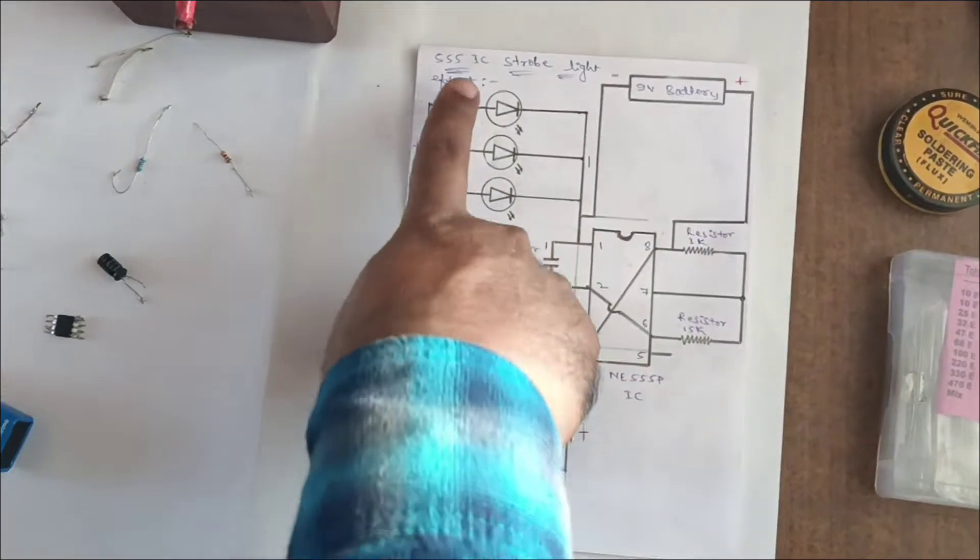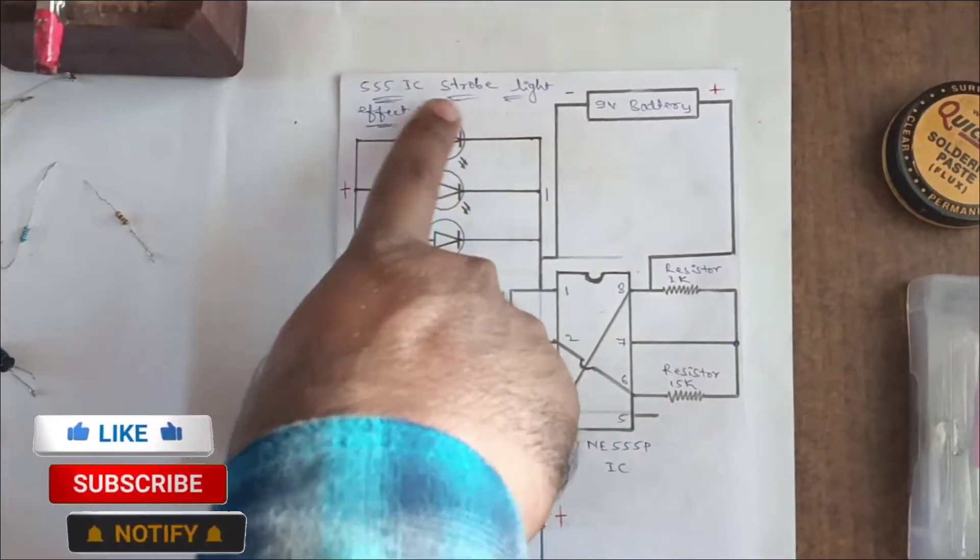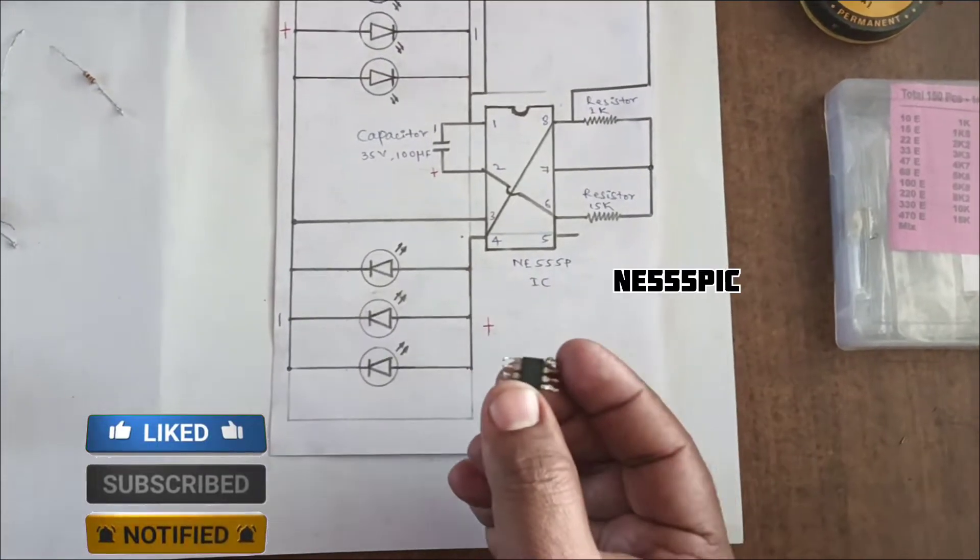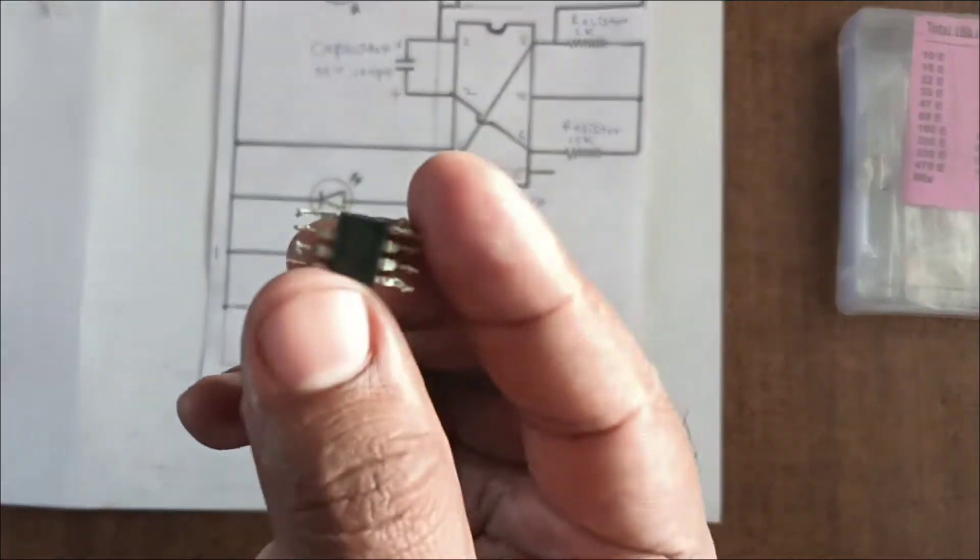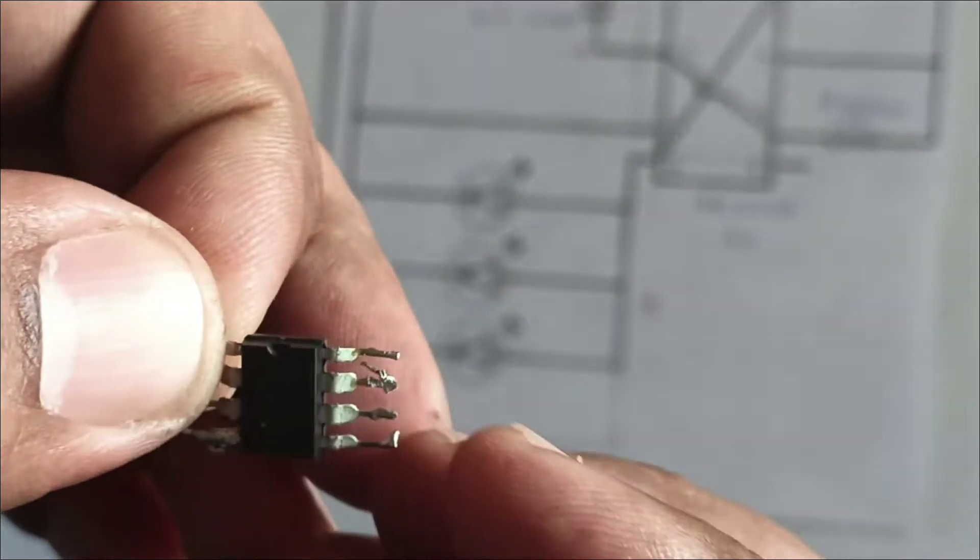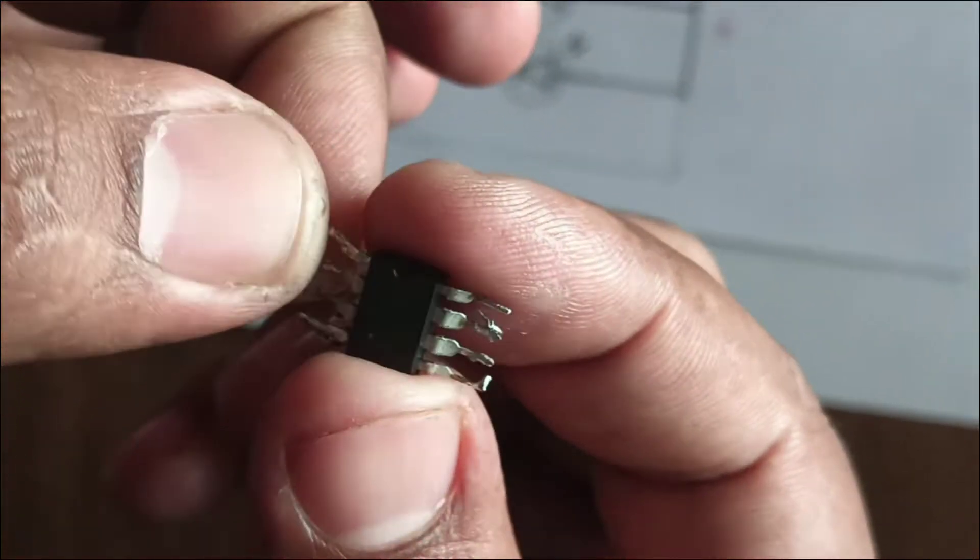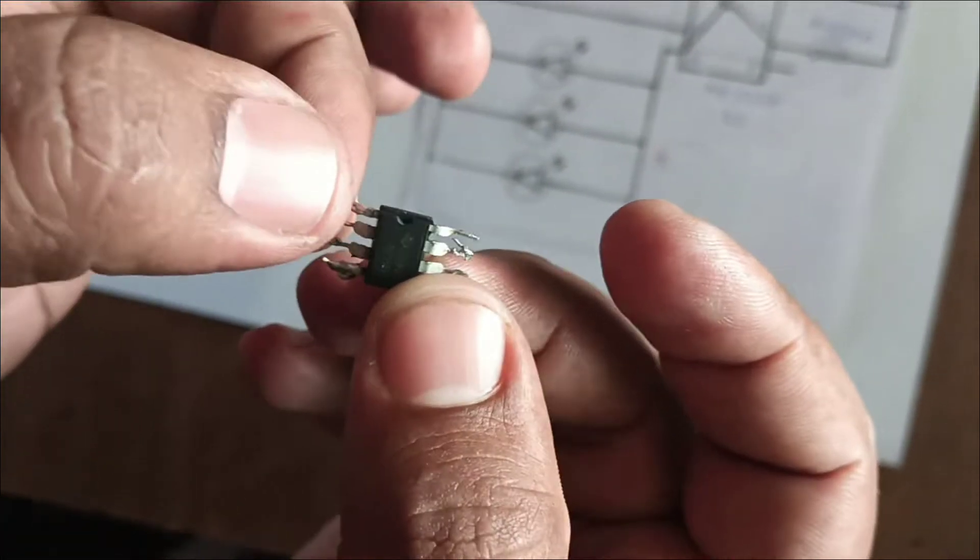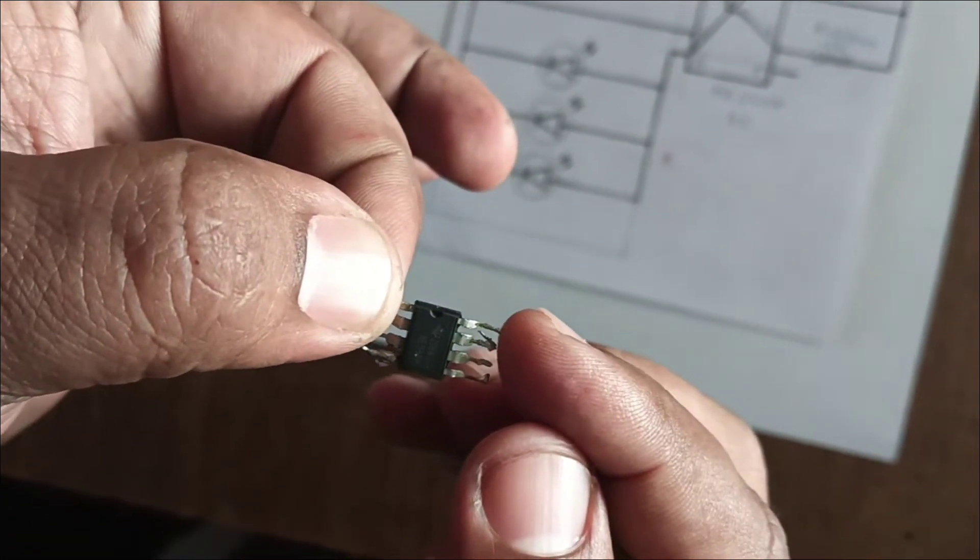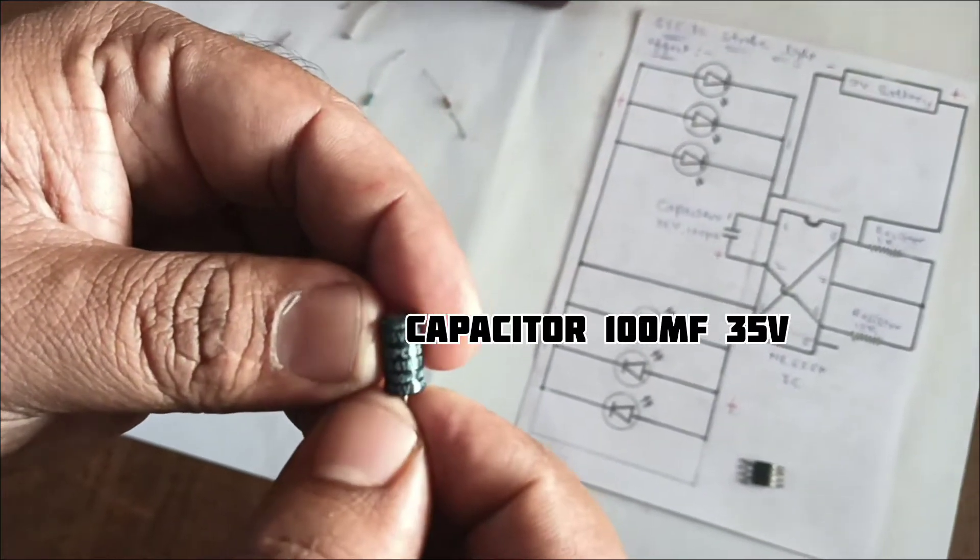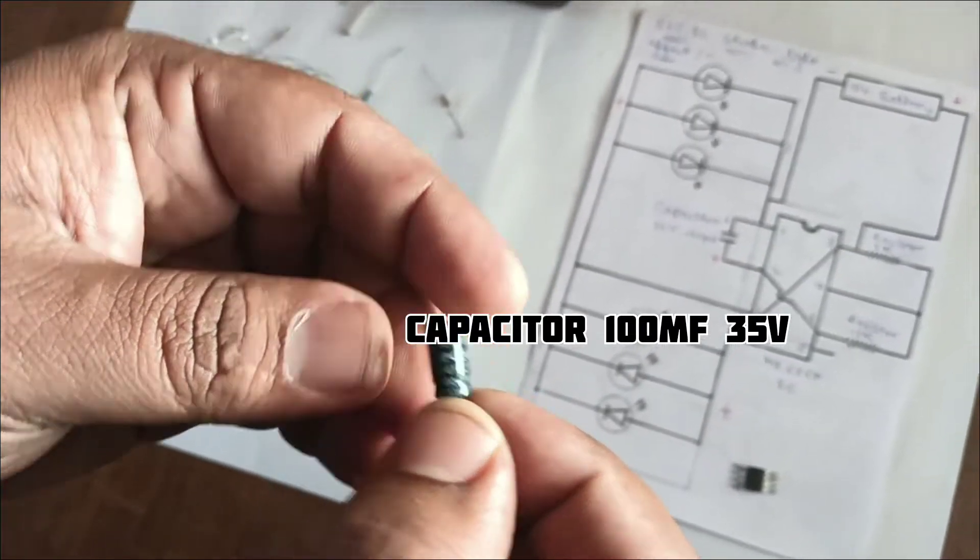Welcome to our channel. In this 555 IC strobe light effect project, we use the NE555P IC. It has four pins on one side and four pins on the other side, totaling eight pins. You can see here the notch indicates pin numbers 1, 2, 3, 4, 5, 6, 7, 8. Next, the capacitor is 35 volts and 100 microfarads.